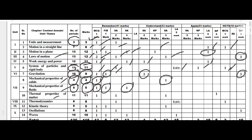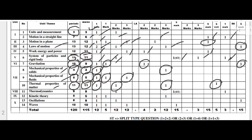Next is Thermal Properties of Matter — 11 teaching hours and 11 marks. The distribution includes one MCQ, one two-mark question, one three-mark question, and one numerical problem which carries five marks.